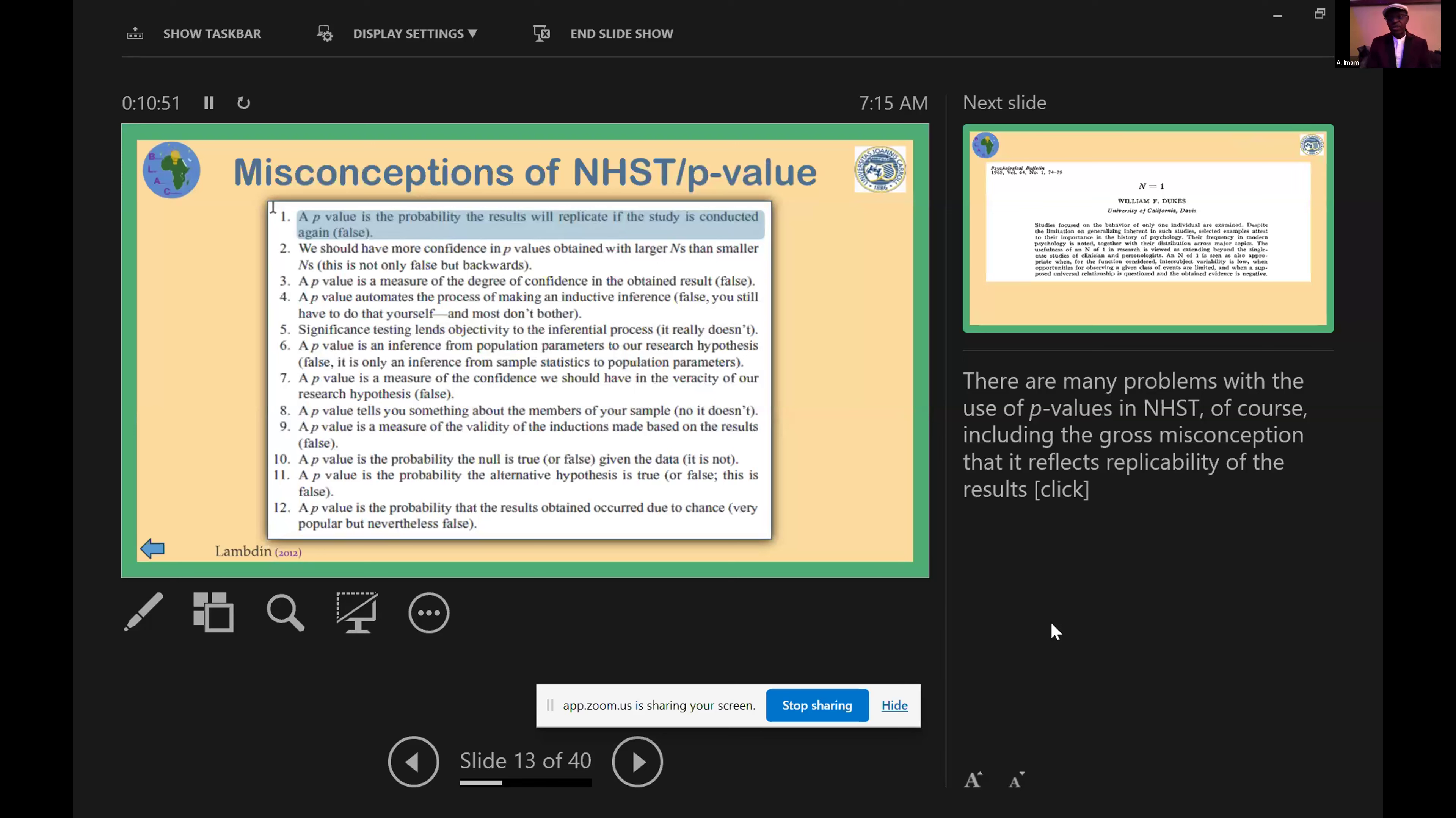There are many problems with the use of p-values in NHST, of course, including the grave misconception that it reflects replicability of the results, which is probably one of the reasons we have complications with its use in psychological research today.